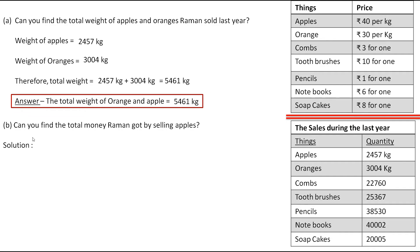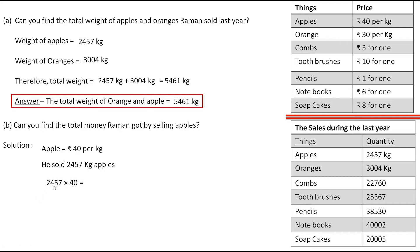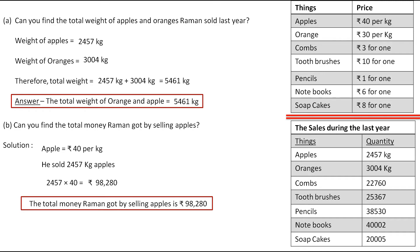The second question is: can you find the total money Raman got by selling apples? The price of apples is ₹40 per kg and the quantity sold is 2457 kg. To find the total money we multiply these two numbers: 2457 × 40 = ₹98,280. So the total money Raman got by selling apples is ₹98,280.